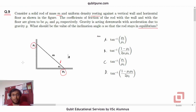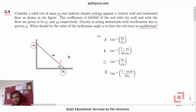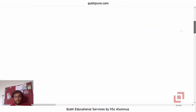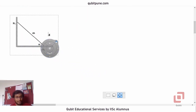This is a fairly simple problem if you understand what equilibrium means for a two-dimensional system. We are going to draw the figure separately and show the forces. The options are all tan inverse of something, so we know it is going to be a trigonometry problem after a few steps.